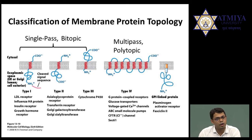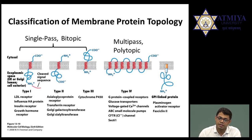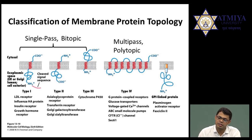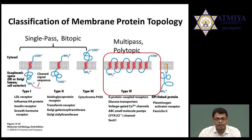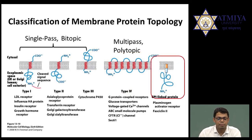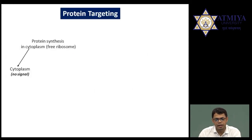Type 4 is multi-pass, as covered in the previous lecture on G protein-coupled receptors — these cross the membrane seven times and are also known as 7-pass or 7-transmembrane receptors. Examples include G protein-coupled receptors, glucose transporters, ABC small molecule pumps, and voltage-gated channels. The last type is GPI-linked receptors; examples include plasminogen activator receptor and facilicin 2. The example for type 1 is the LDL receptor and influenza; for type 2 it is transferrin receptor and Golgi glycosyltransferases.